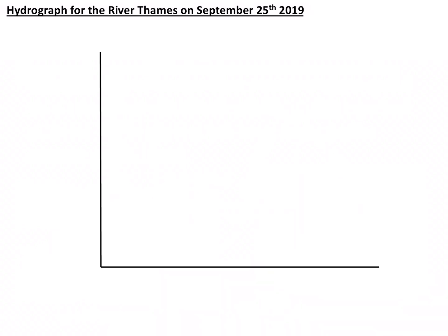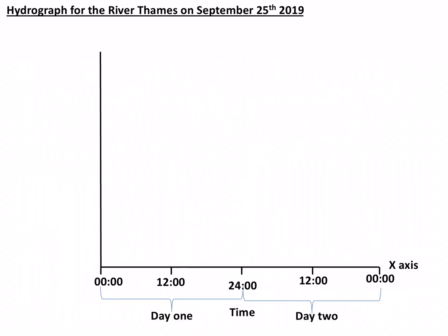This hydrograph is for the River Thames on September 25th, 2019. First we begin with the axes. The x-axis shows time, and this hydrograph shows how the river discharge changes in the River Thames over two days. On the y-axis there are two variables.